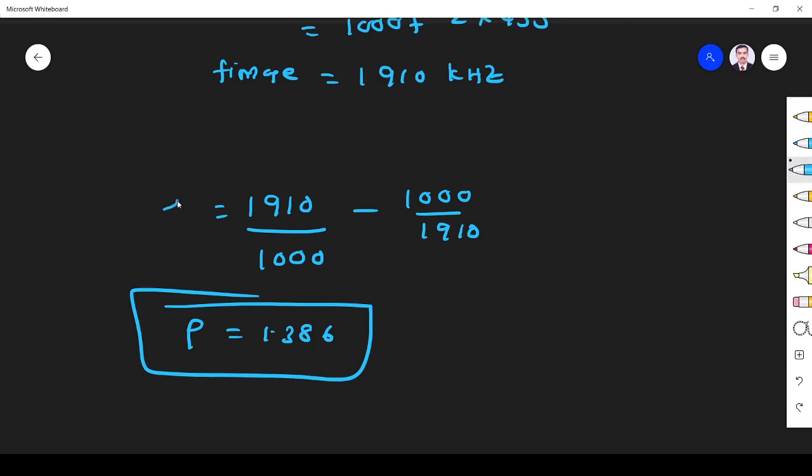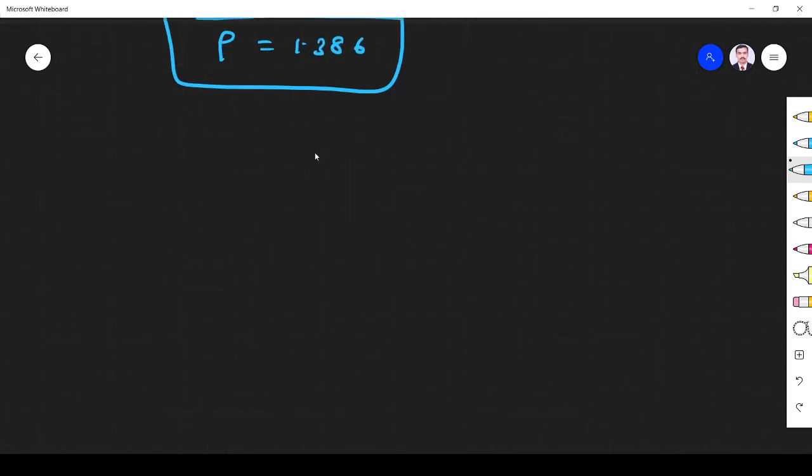Rho we got. If we get rho, what about alpha? Alpha is the image frequency rejection ratio. Alpha equals square root of 1 plus rho squared, 1.386 squared, times Q squared.